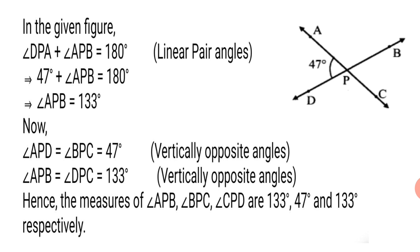With the property of vertically opposite angles we can find the remaining two angles. Angle APD equals angle BPC equals 47 degrees — reason: vertically opposite angles. And angle APB equals angle DPC equals 133 degrees — reason: vertically opposite angles. Hence, the measures of angle APB, angle BPC, and angle CPD are 133 degrees, 47 degrees, and 133 degrees respectively.